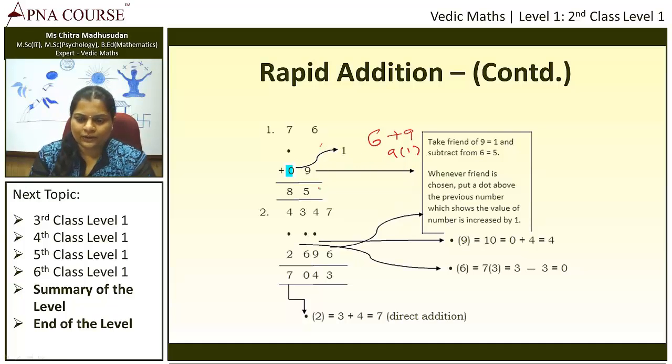So 6 minus 1, which means whenever the friend is chosen, you should keep a dot on the previous number. Here we don't have any number, so assume it is 0. We are keeping a dot on the top of 0. So the value of 0 increases by 1. Please note this.